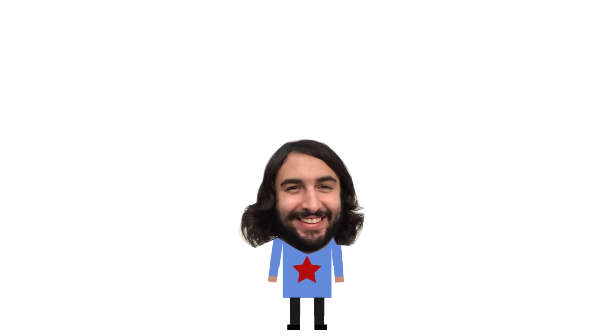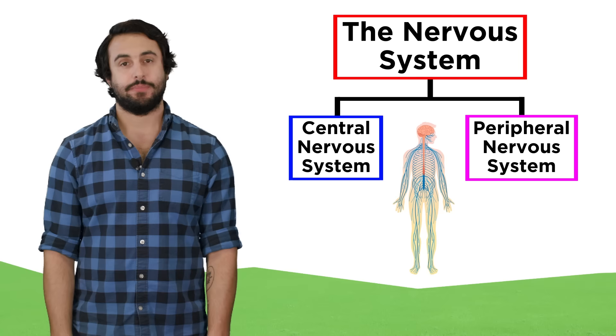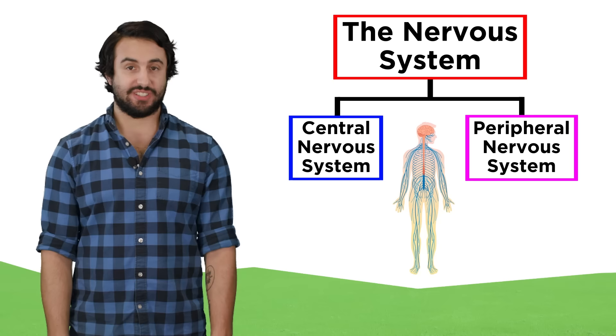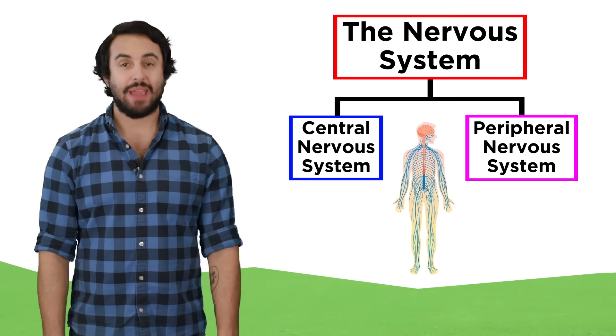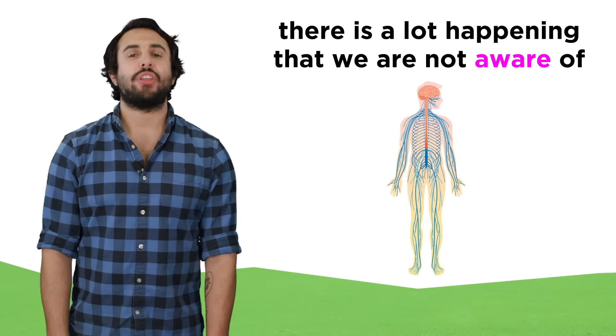Professor Dave here, let's look at the autonomic nervous system. After looking at the central nervous system and certain divisions of the peripheral nervous system, we have a reasonable understanding of how sensory information makes it to the brain, which then tells the body what to do, like when you touch something hot and then quickly pull your hand away. We also understand how we might decide to execute a particular action, like walking across the room, but there is so much happening in our nervous system that we are not consciously aware of.